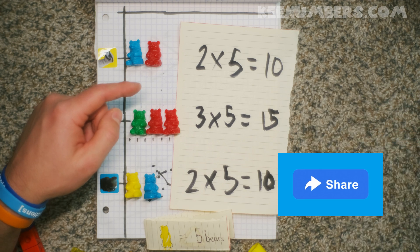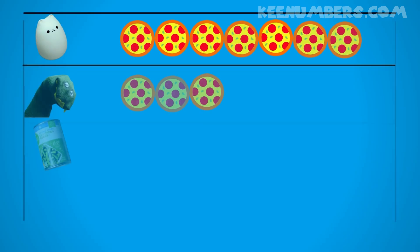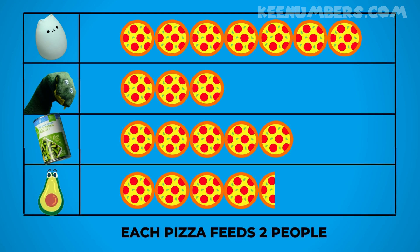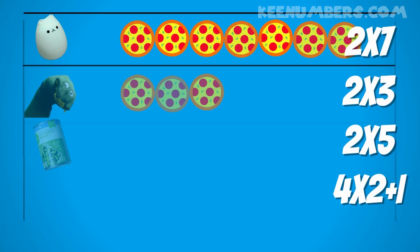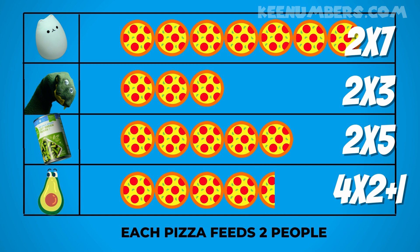Let's look at this pictograph. Mega Kitty has seven pizzas, the greater gator has three pizzas, green beans has five pizzas, and the avocado has four and a half pizzas. Each pizza feeds two people. What is a half? Half a moon represents two equal parts that make a whole — that's the half concept.